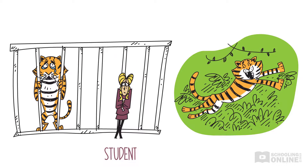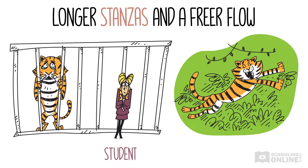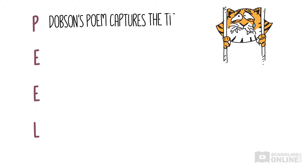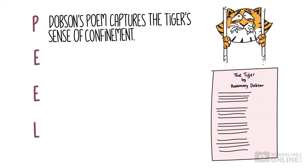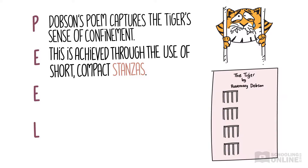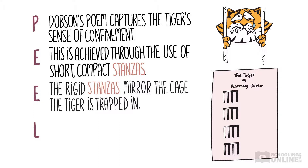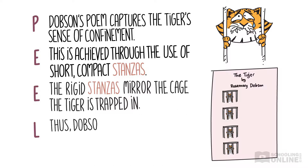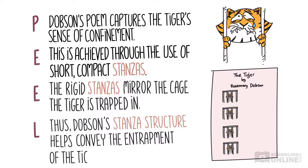If Dobson wanted to convey how free the tiger felt as it roamed around the jungle, she'd probably have longer stanzas with a freer flow — that would create a sense of movement and freedom, not the caginess she wishes to convey here. Here's an example of how we'd turn this into a PEEL-style paragraph. Our main point is that Dobson's poem captures the tiger's sense of confinement. As evidence, we would say this is achieved through the use of short, compact stanzas. Then we'd offer our explanation: the rigid stanzas mirror the cage the tiger is trapped in. Finally, we would link back: thus, Dobson's stanza structure helps convey the entrapment of the tiger.